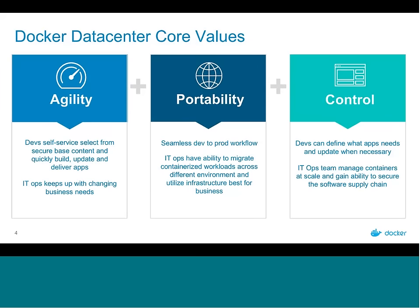From a portability standpoint — perhaps one of the biggest use cases for Docker — developers get a seamless pipeline moving from dev, test, staging, and into production, since the application runs the same way regardless of environment without tweaking code. IT ops teams have the ability to migrate workloads to any environment, whether a multi-cloud strategy with Azure and AWS or a hybrid cloud with bare metal servers. Lastly, the control aspect: developers define what an application needs to run, and IT ops can manage, secure, and reduce cost for the overall environment.